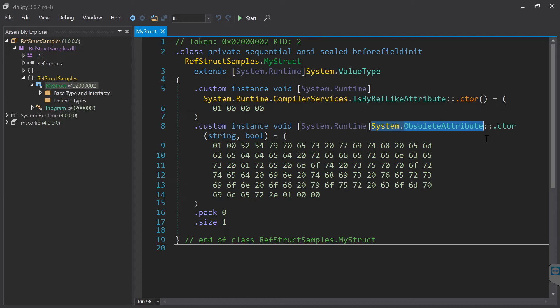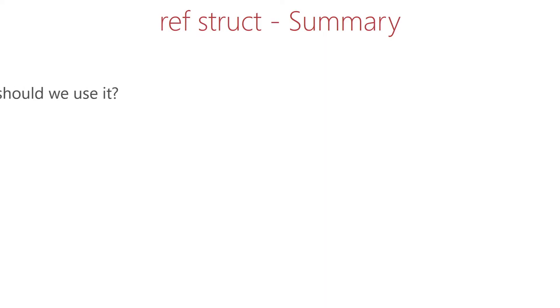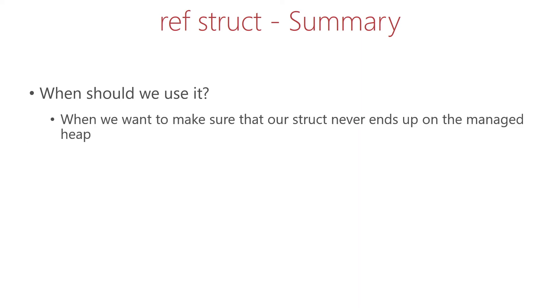Alright, so to sum up, when should we use a ref struct? The short answer is that we should use a ref struct each time when we want to make sure that our structs never end up on the managed heap. And this means that ref structs don't put pressure on the GC.